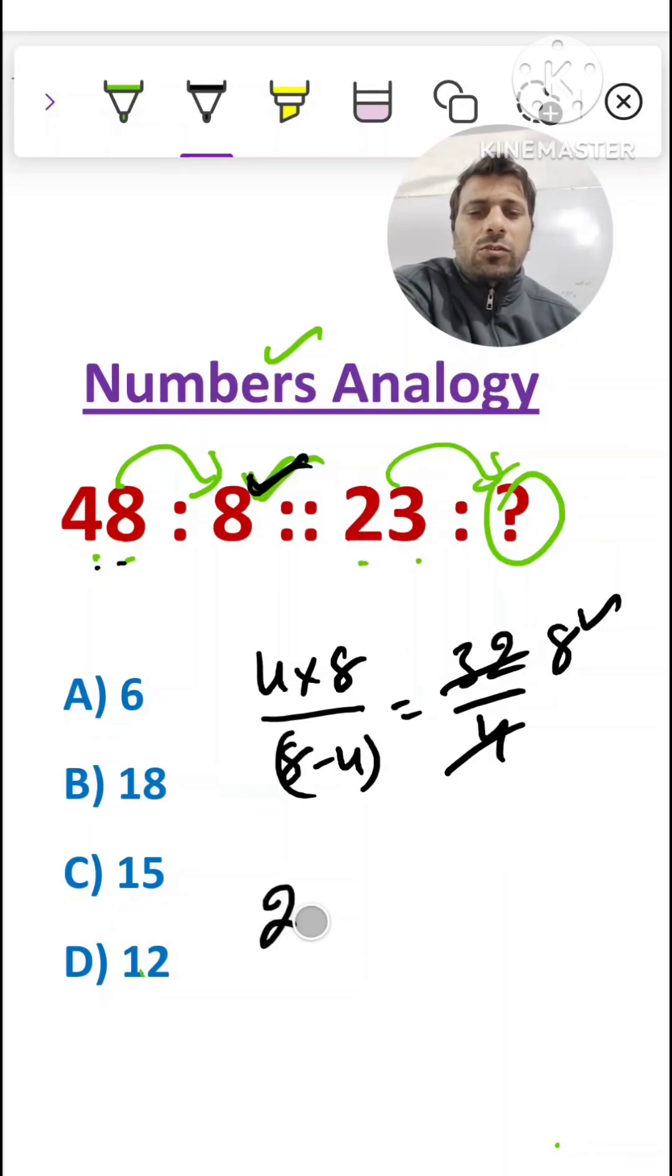In the same manner, multiply the digits of 23, 2 times 3. In the denominator, take the subtraction, then we get 3 minus 2, which equals 6 upon 1, which equals 6.